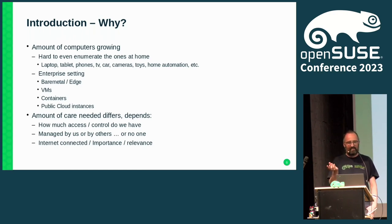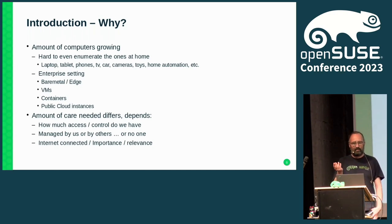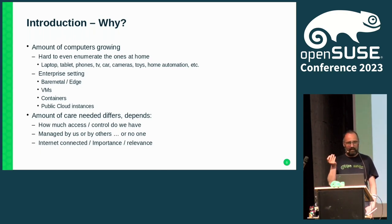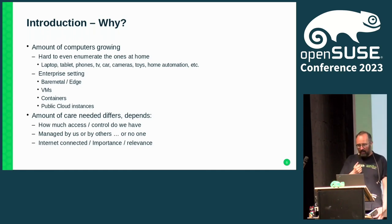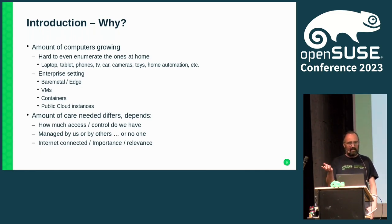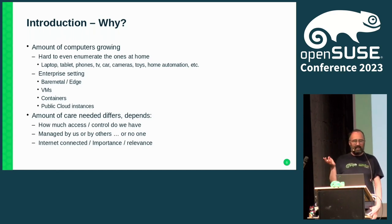The laptop, obvious; tablets, phones, obvious — but your TV has a computer. Your car has 10, 20, 30 computers. Your camera, your kids' toys. Not to forget the home automation, with like 50 small computers. And of course, in your regular enterprise setting, you have a lot of computers with different types: bare metal, edge devices, virtual machines, containers, or something in the public cloud that is running on a computer you don't own.